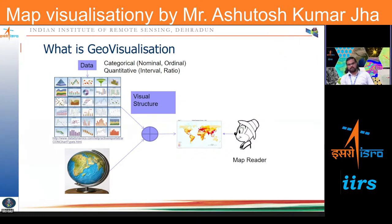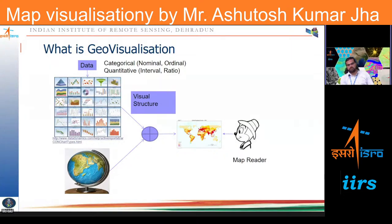There is a new term now being coined called geo-visualization. Under geo-visualization techniques, you have a dataset which may be categorical or quantitative. A categorical dataset is one where each place can belong to only one class — for example, classes like forest, agriculture, or water bodies. Each place on earth must be grouped in one of these categories; there is no possibility of putting the same place in two different categories.